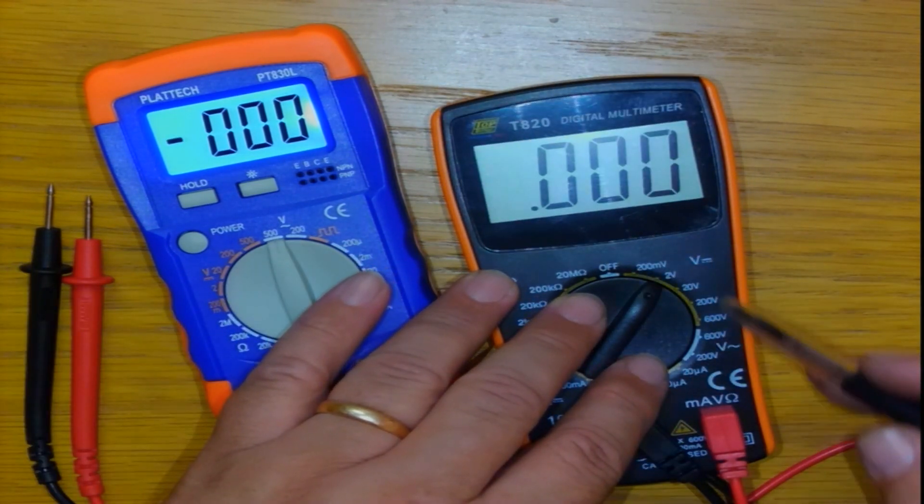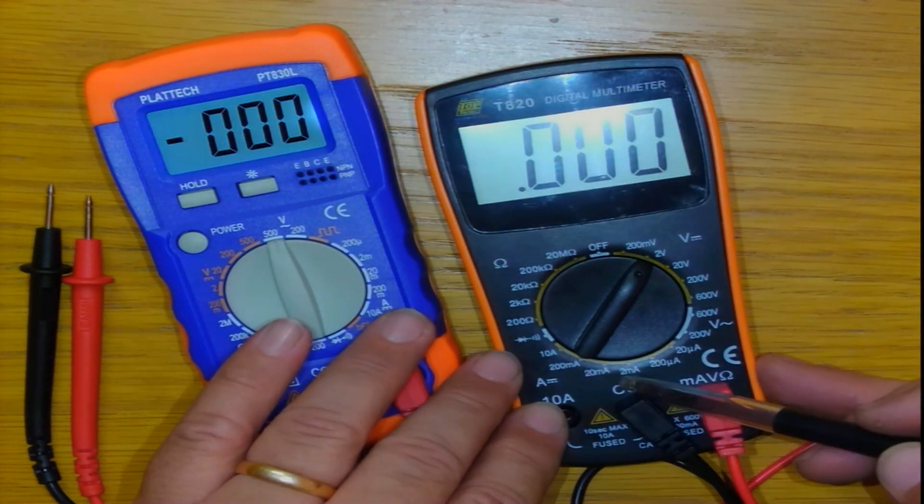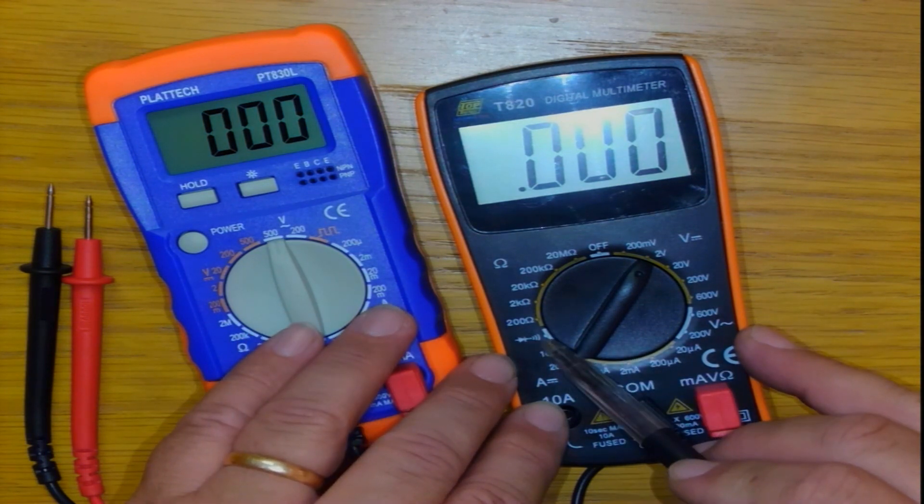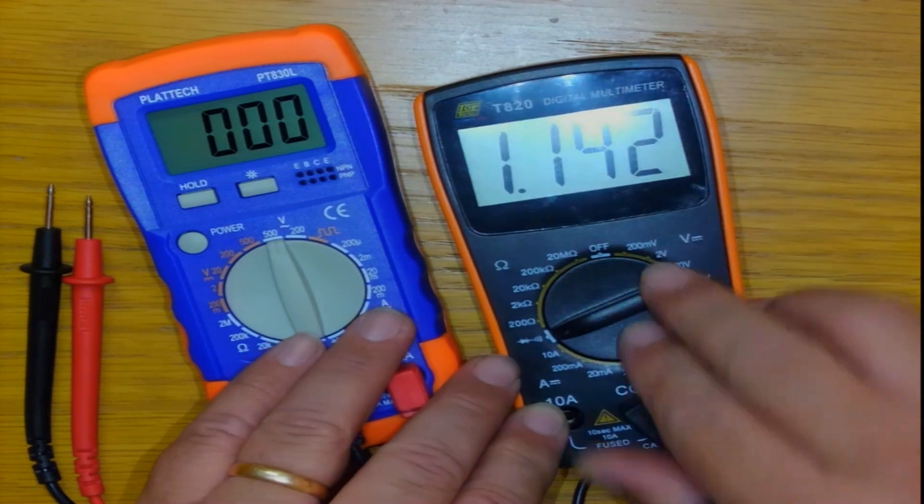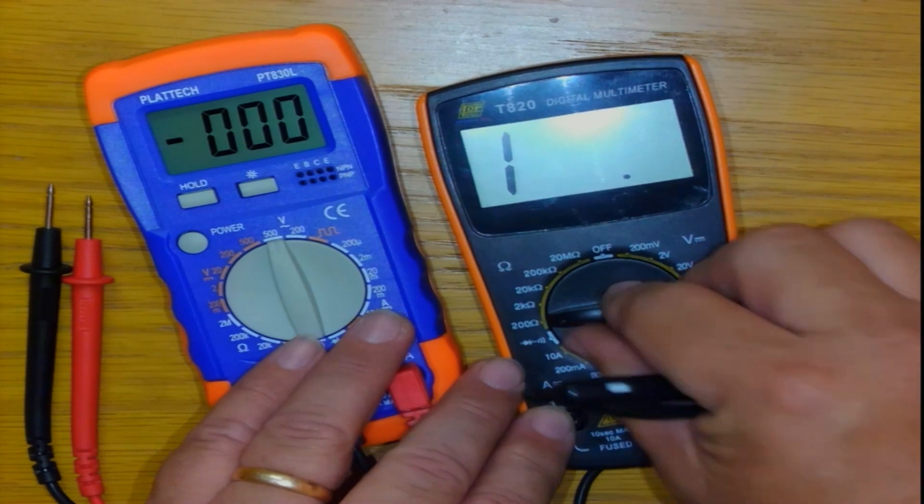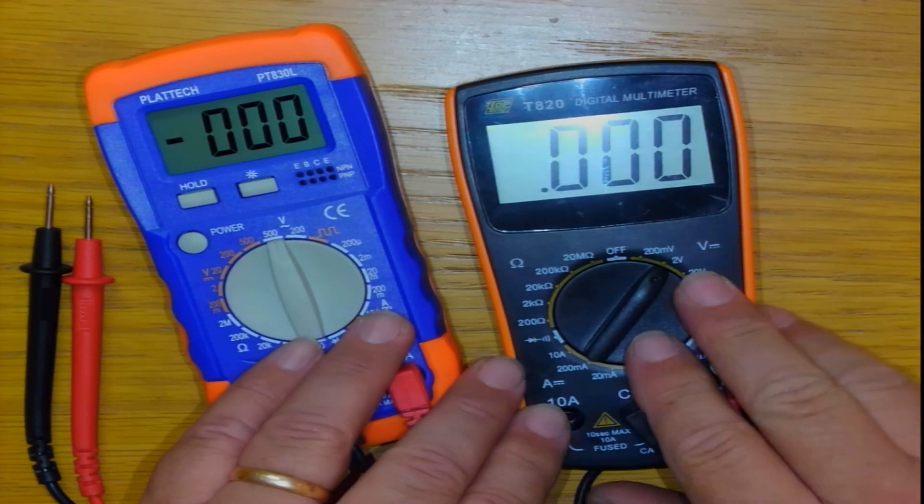On the controls you have the ranges: voltage, resistance, current, and in this model continuity beep or diode test. So if I do that, the screen will change accordingly. Resistance is usually big if there's no voltage applied, usually zero.